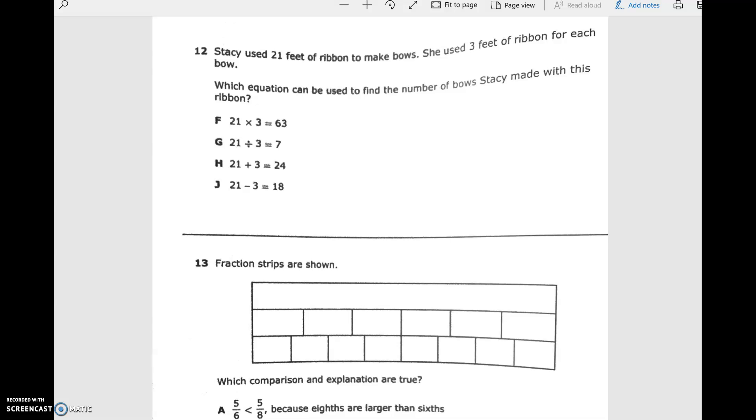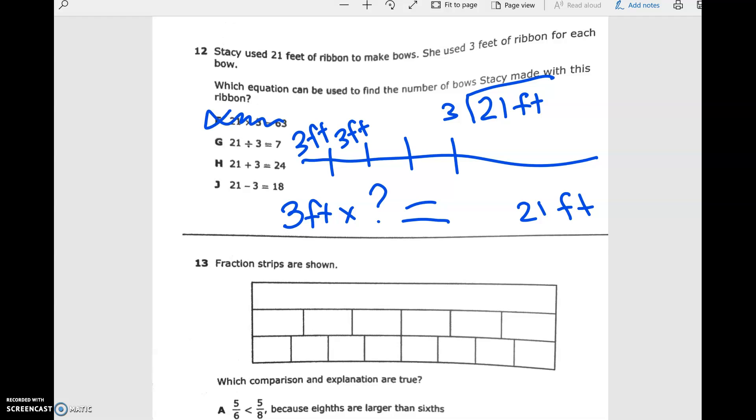Number 12. Stacy used 21 feet of ribbon to make bows. She used 3 feet of ribbon for each bow. Which equation can be used to find the number of bows? She's got 21 feet and she's going to divide it into sections of 3 feet, basically, right? So we could do 3 feet times how many bows is equal to 21 feet, or we could do 21 feet divided by 3. So we can't do 21 times 3. Goodness gracious, no. 21 divided by 3. We said we like that one. We're not going to add it. We're definitely cutting the ribbon into pieces. So no, we don't like that one. And we're not going to take away either. So your correct answer would be G. But remember, you could also do 3 times what equals 21.